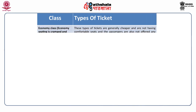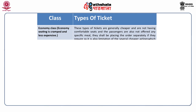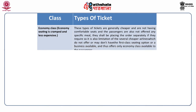The first class is Economy Class, where seating is cramped and less expensive. These tickets are generally cheaper and do not have comfortable seats, and passengers are not offered any specific meal — they shall place orders separately if required. Several cheaper airlines do not offer a first class or business class option and thus offer only economy class to passengers.